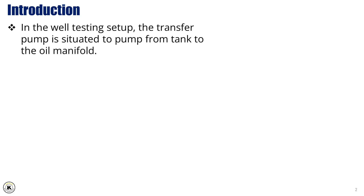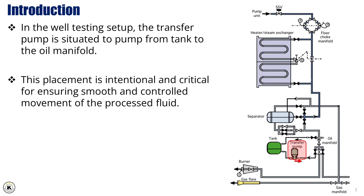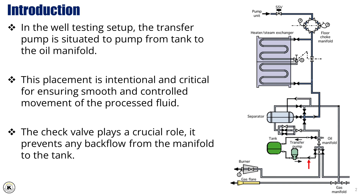In the well-testing setup, one key component to highlight is the transfer pump. As shown here, it's positioned to pump fluid from the tank directly to the oil manifold. This placement is intentional and critical for ensuring smooth and controlled movement of the process fluid. Something important to notice in this arrangement is the presence of a check valve, which plays a crucial role — it prevents any backflow from the manifold to the tank, which could disrupt operations or even cause damage to equipment. This simple but essential piece of hardware ensures the flow remains in one direction, maintaining both efficiency and safety in the system.